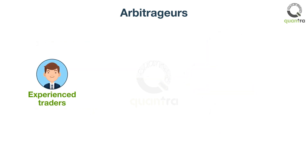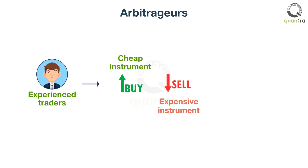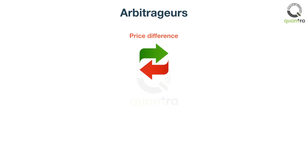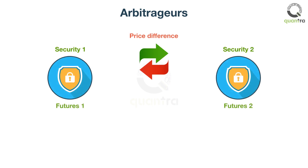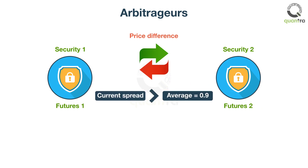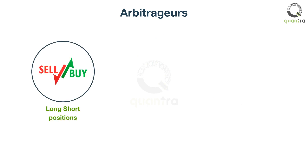For this reason, arbitrageurs are generally very experienced traders. They buy the cheaper instrument and sell the expensive instrument, thereby capturing the spread between the two instruments. For example, if one sees that the price difference between two similar instruments, or two different futures contracts of the same underlying, is 0.9 on average, and if the current spread between the two is greater than the average, there's an arbitrage opportunity. Whenever arbitrageurs spot such anomalies, they keep taking suitable long and short positions until the anomaly disappears.